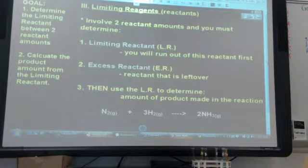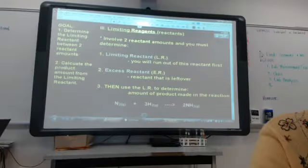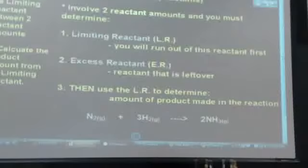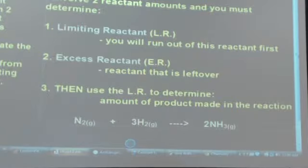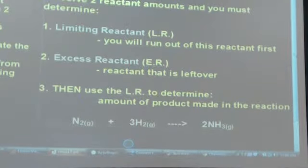In our case, if we look at the equation down at the bottom, you might have a given amount of nitrogen and a given amount of hydrogen, and you want to determine which one of those reactants you are going to run out of first. And then by looking at that reactant, whichever one is limiting, that will determine how much ammonia you can make.